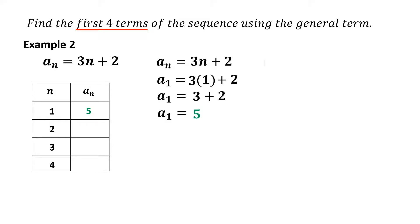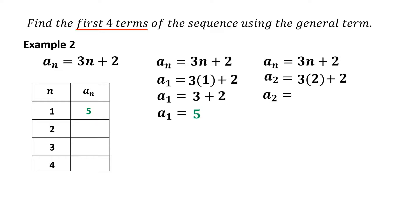Finding the second term using a sub n equals 3n plus 2. Substitute n equals 2: a sub 2 equals 3 times 2 plus 2 equals 6 plus 2 equals 8. Therefore, the second term of the sequence is 8.